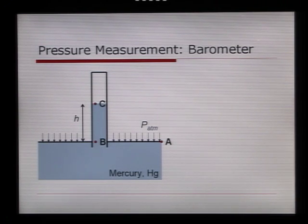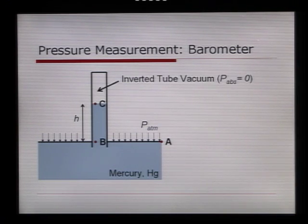The barometer is used to measure atmospheric pressure. It consists of an inverted tube in generally a bath of some fluid, and the one I've shown here is mercury, given the chemical symbol Hg. We see the atmospheric pressure acting down along the surface that is open to atmosphere, and then the tube itself has a vacuum. So it's an inverted tube vacuum where the absolute pressure inside that tube is zero. Because of this vacuum and low pressure,